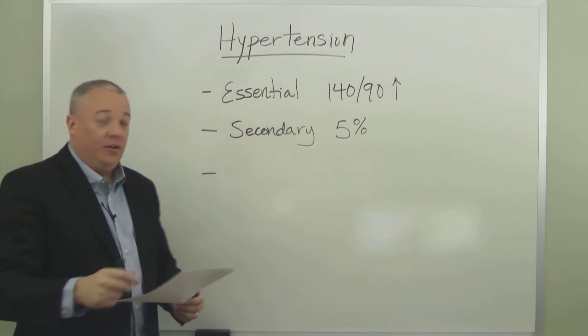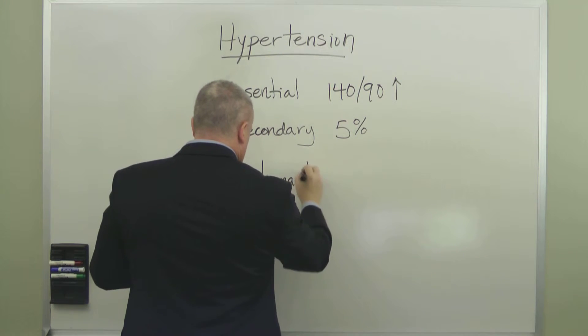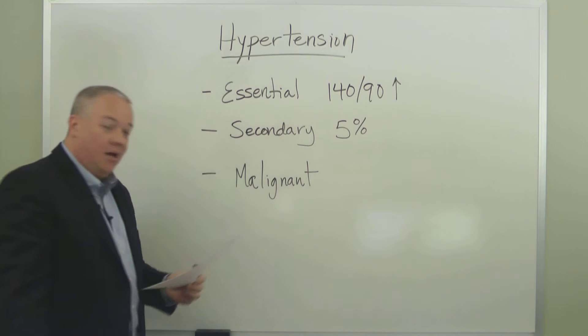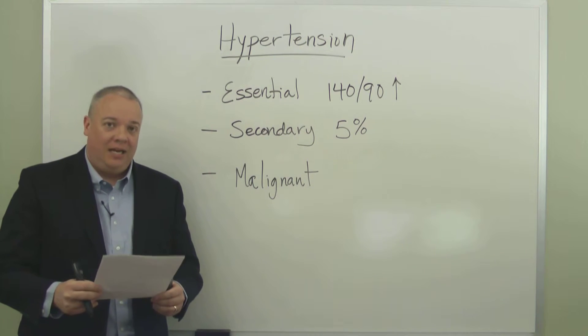Finally, the third level is malignant. Malignant hypertension is uncontrolled, severe hypertension and is life-threatening.